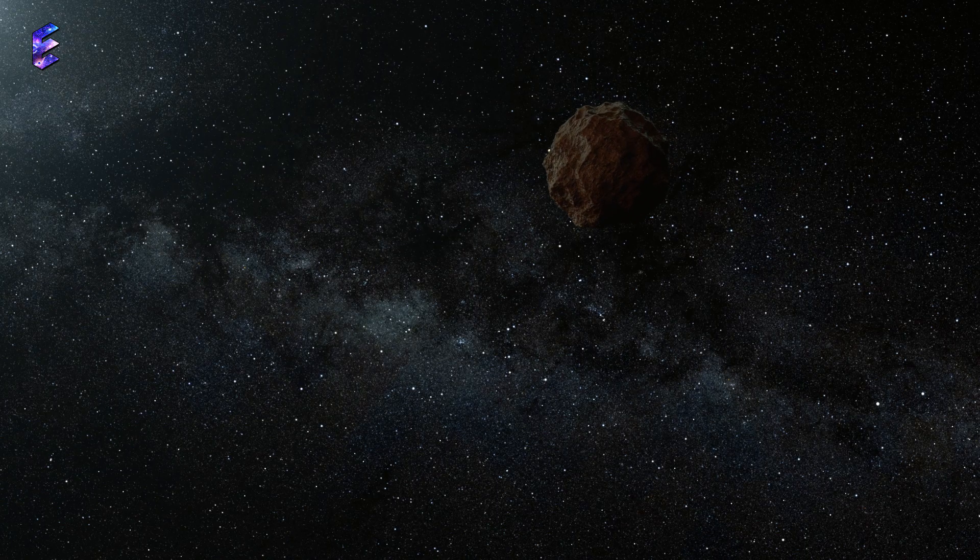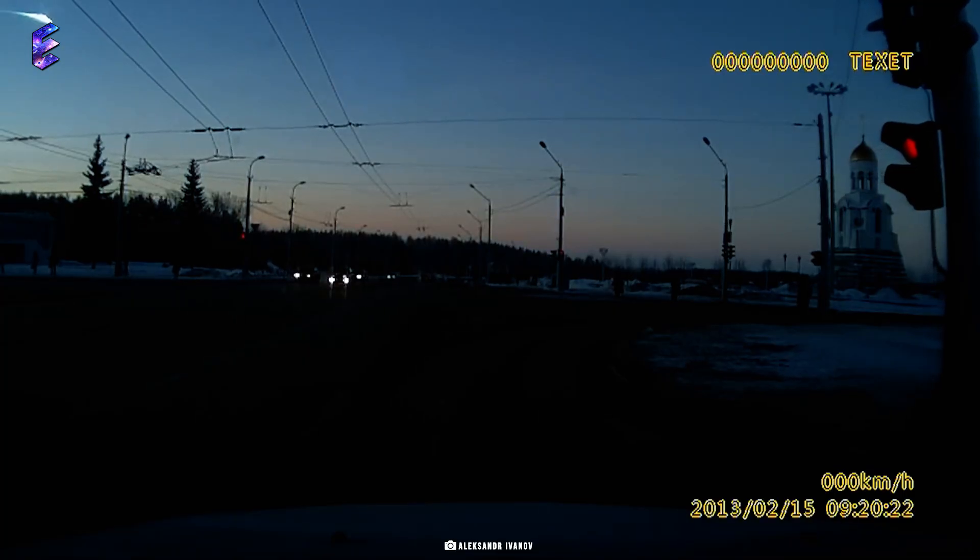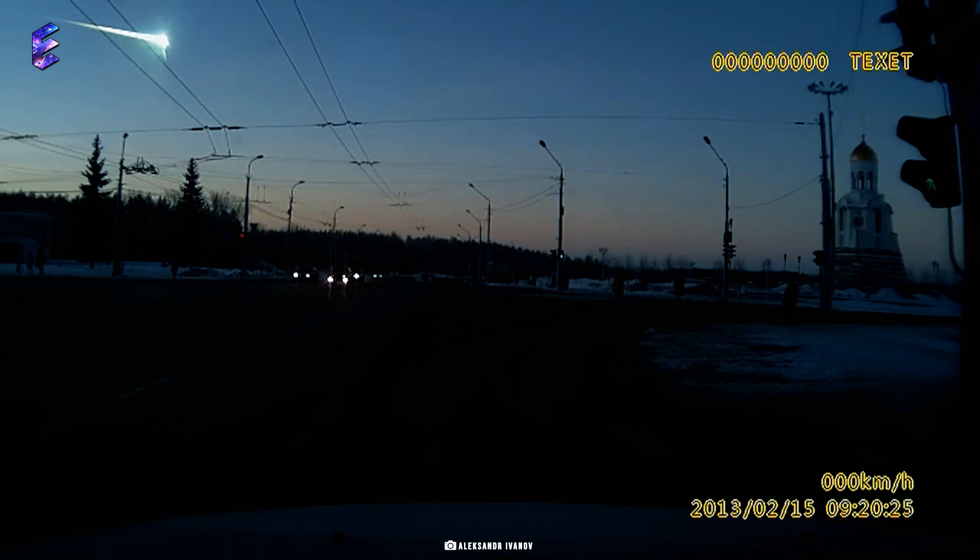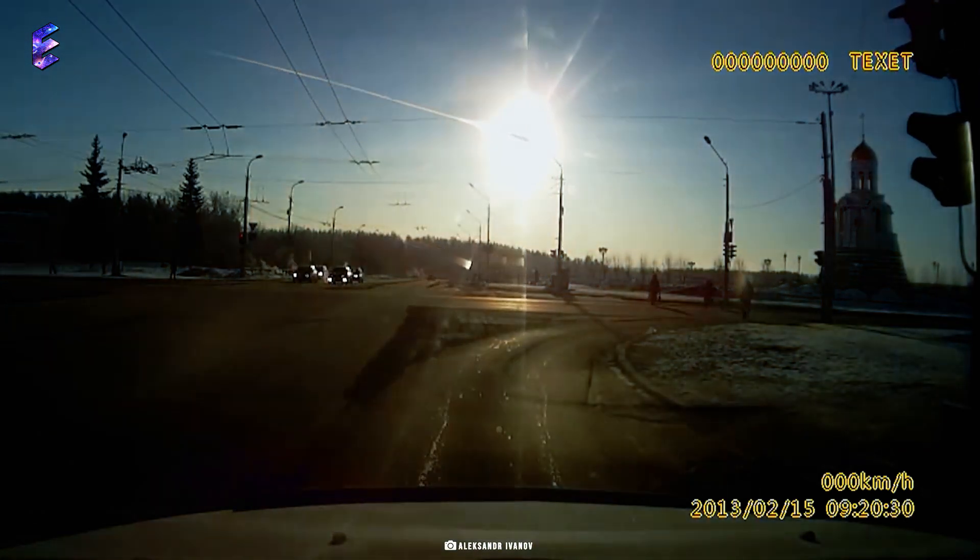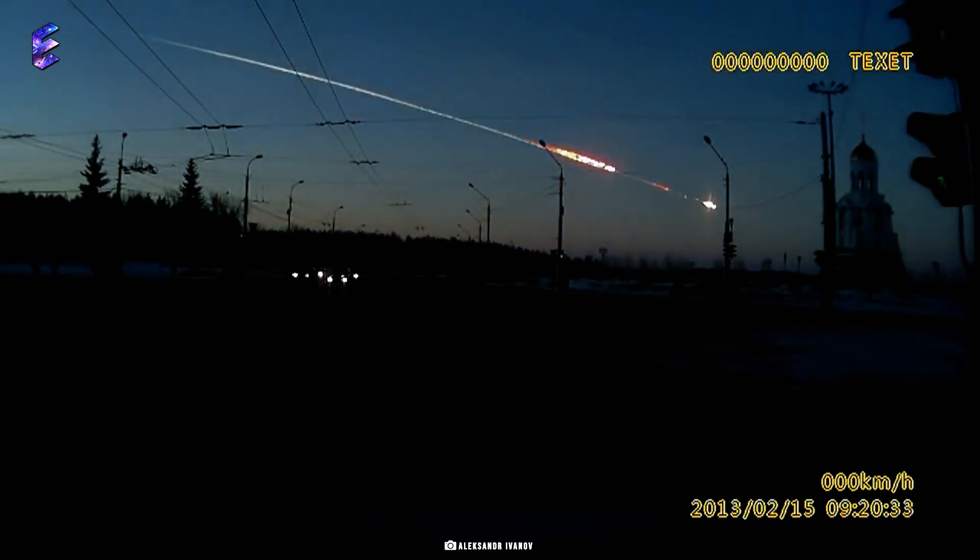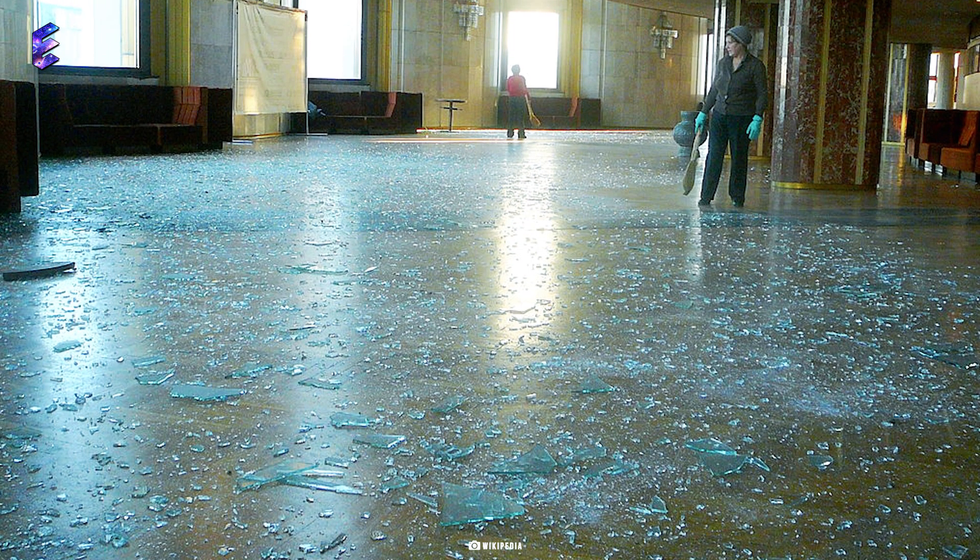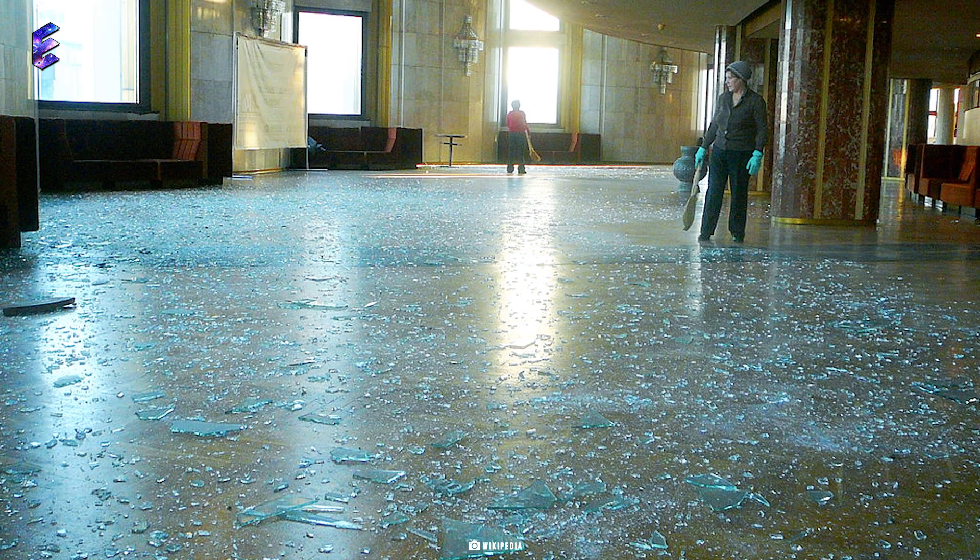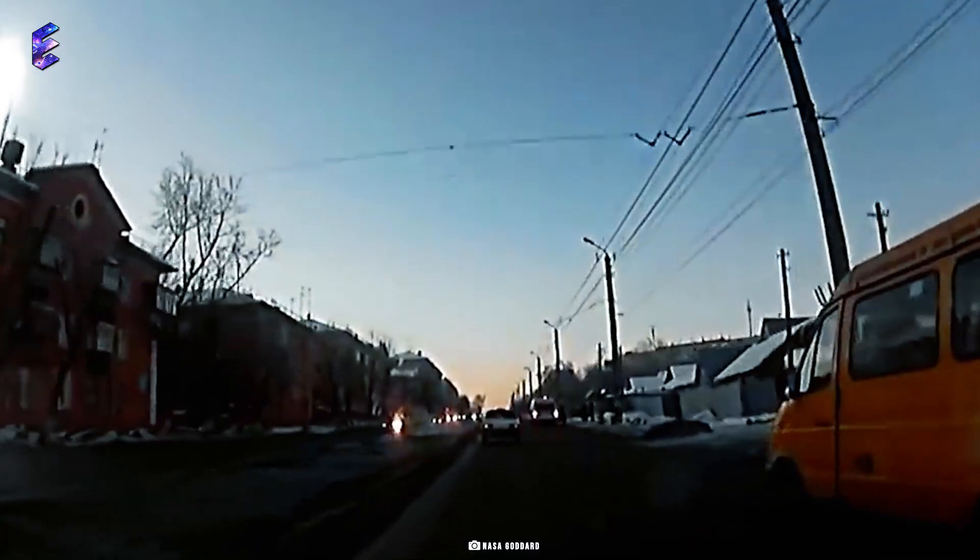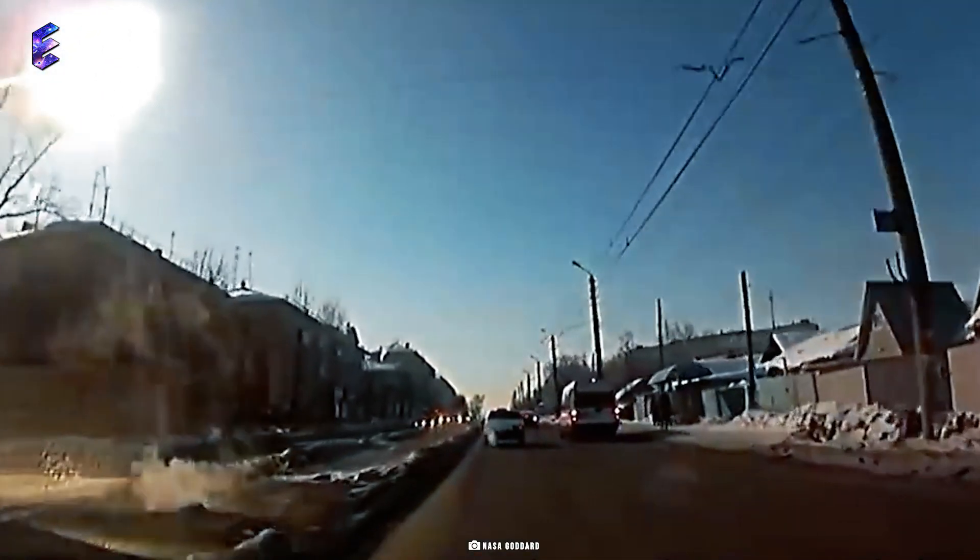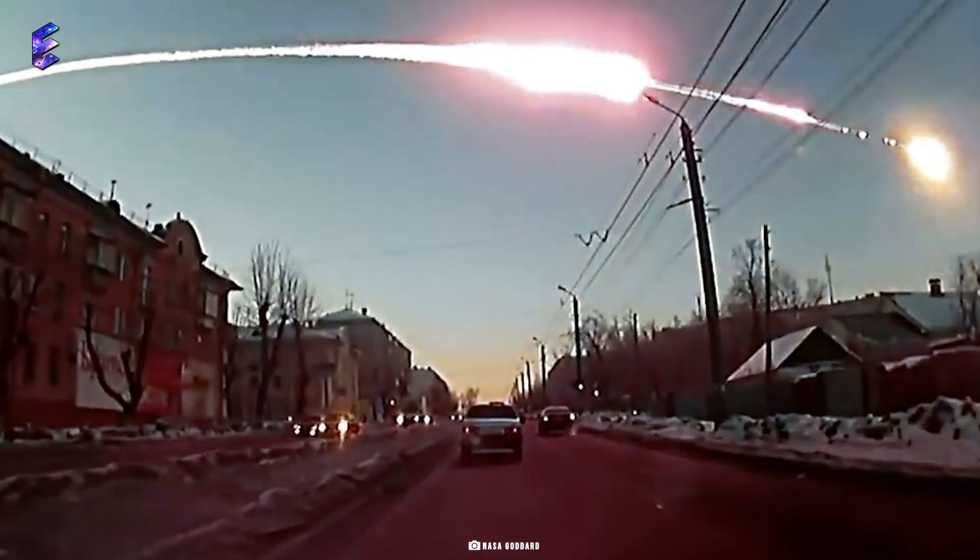Whereas, the 2013 asteroid almost the size of a tennis court crashed into Earth's atmosphere at nearly 70,000 kilometers per hour, racing from southeast to northwest. The impact of this asteroid led to shattered windows all over the city injuring around 1,500 people because of the flying glass. When the asteroid blasted in the sky, it emitted energy equivalent to the detonation of about half a million metric tons of TNT.